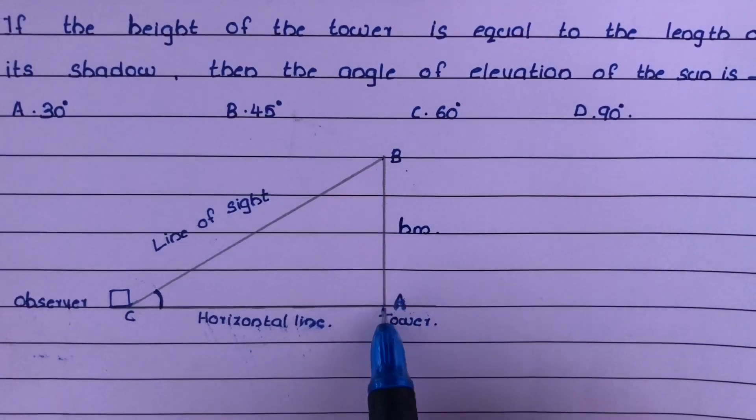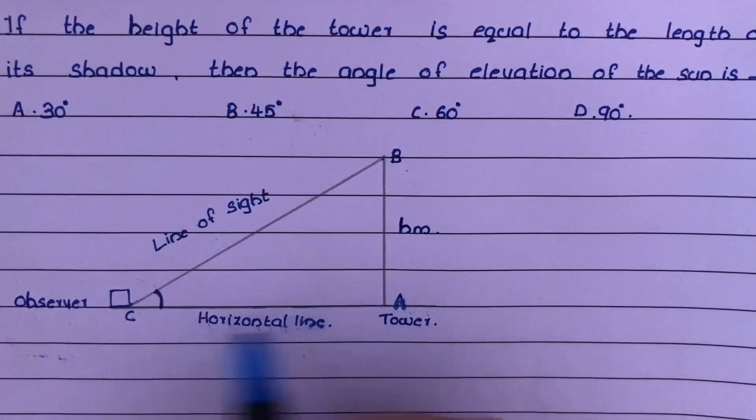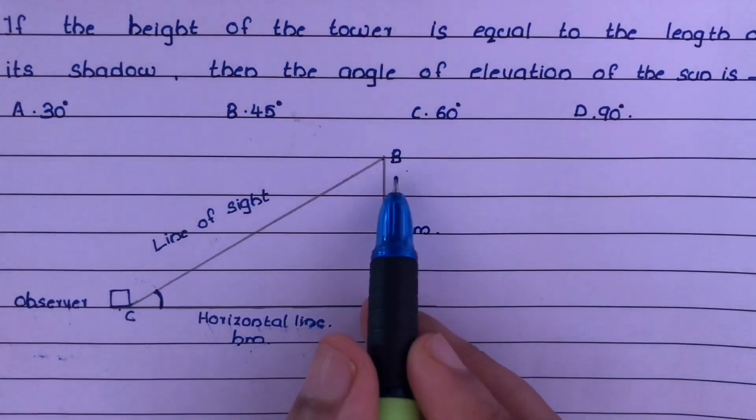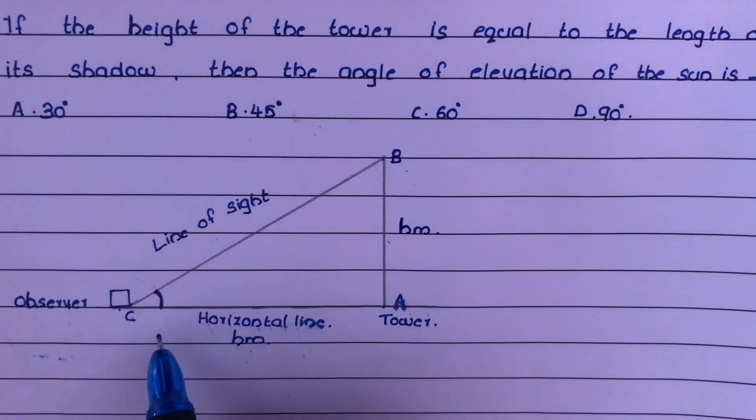Then, as per the question, the height of the tower is equal to the length of its shadow. The shadow is AC. So the length of AC is H meters. The height of the tower and length of the shadow are equal.